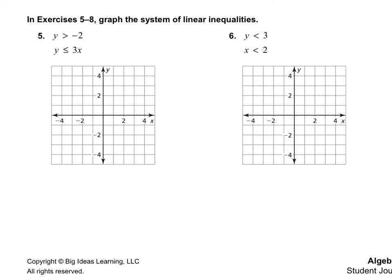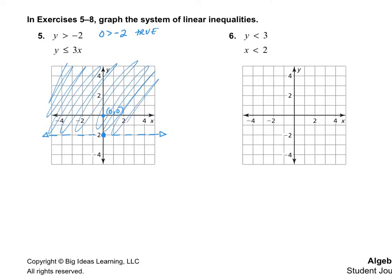I'm going to do number 5 for you. I like to do these in different colors. I'll do the first one in blue. y is greater than negative 2 crosses the y-axis at negative 2. Because it's just greater than and not greater than or equal to, we need a dashed line. Now I'm going to plug in (0, 0): 0 greater than negative 2 is a true statement, so I'm going to shade everything above it.